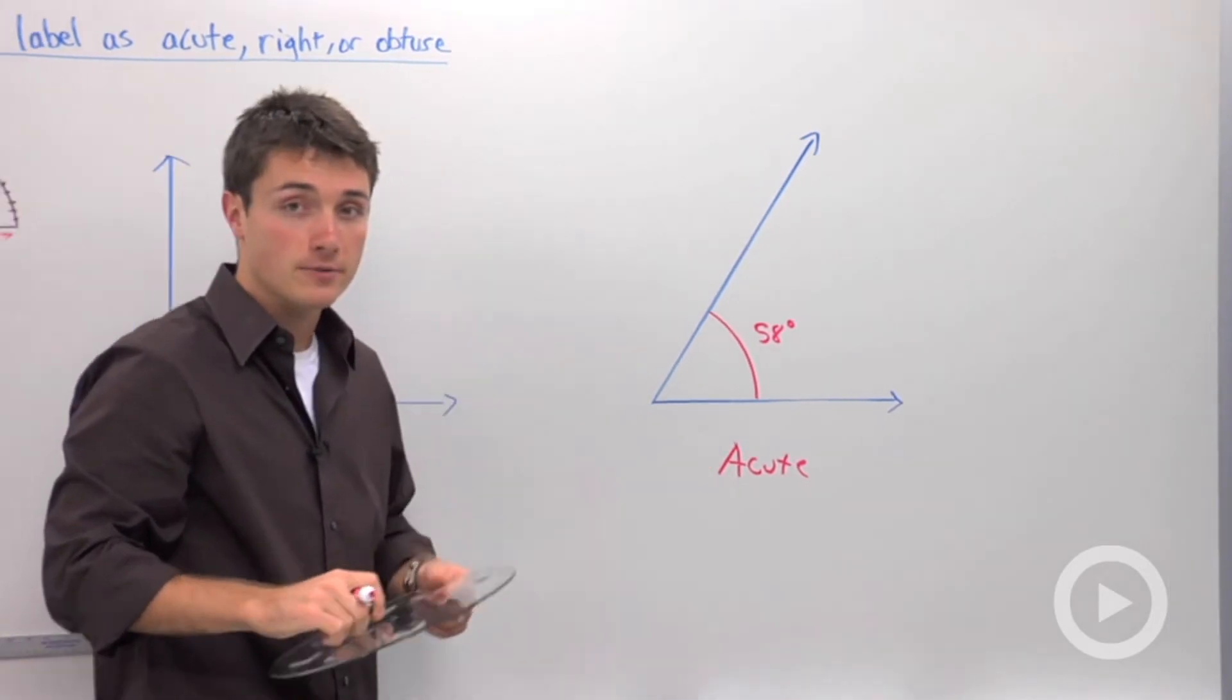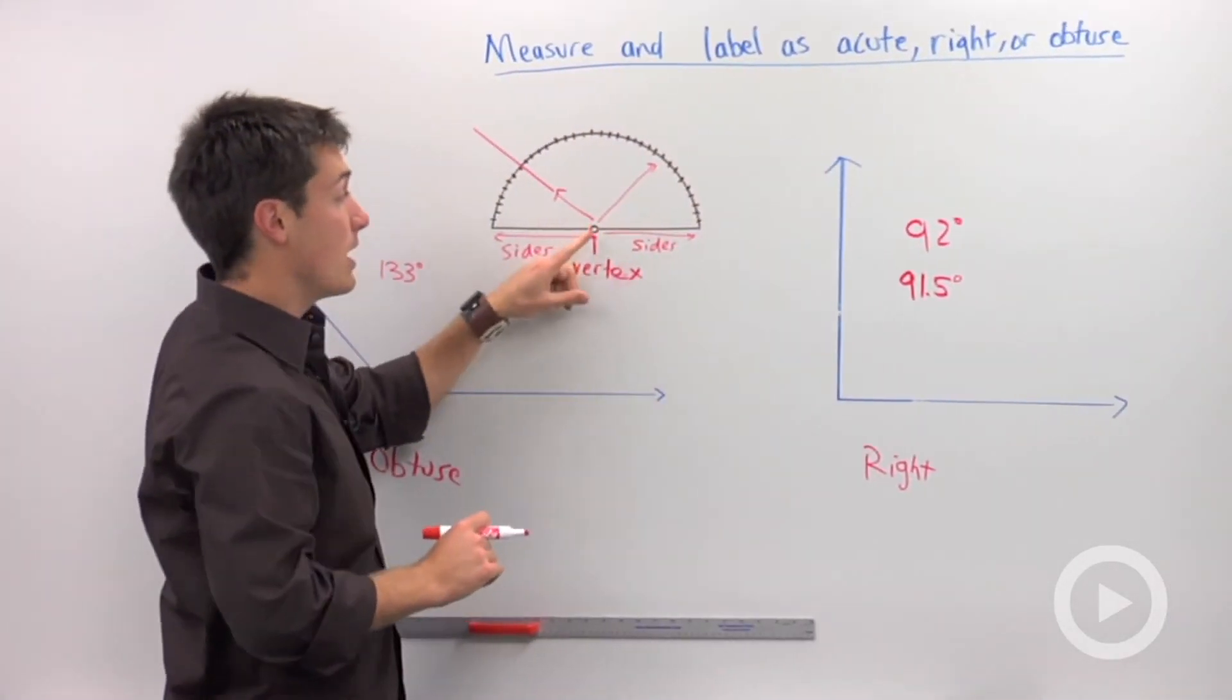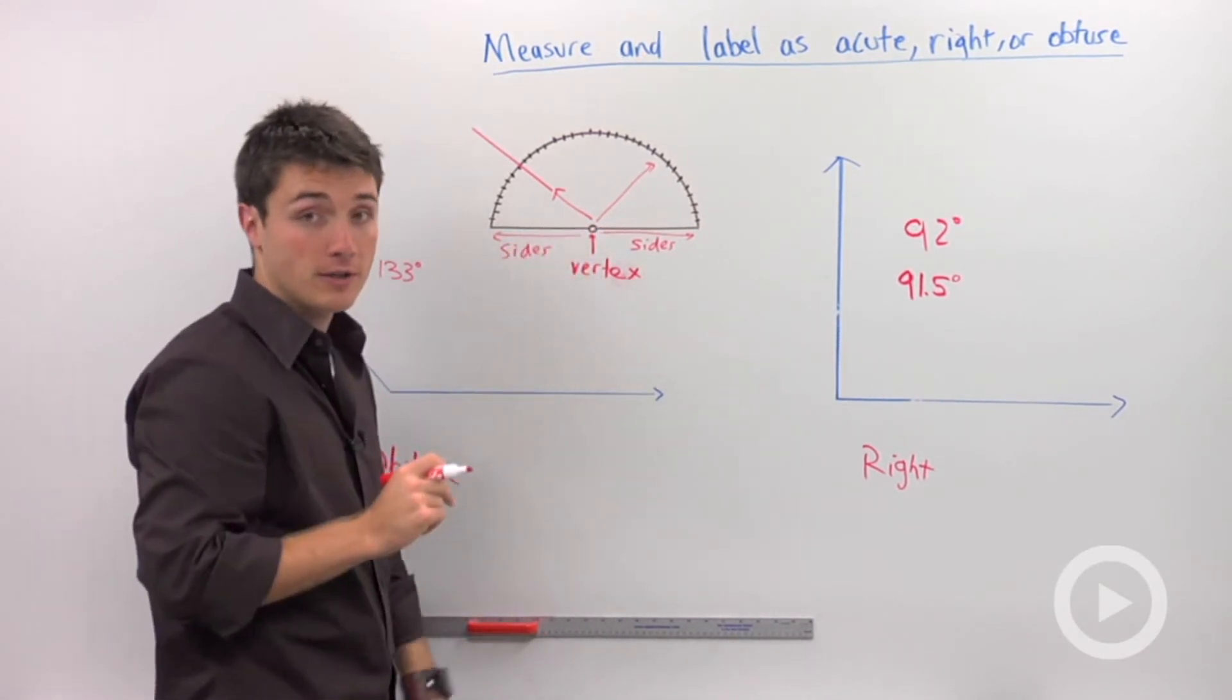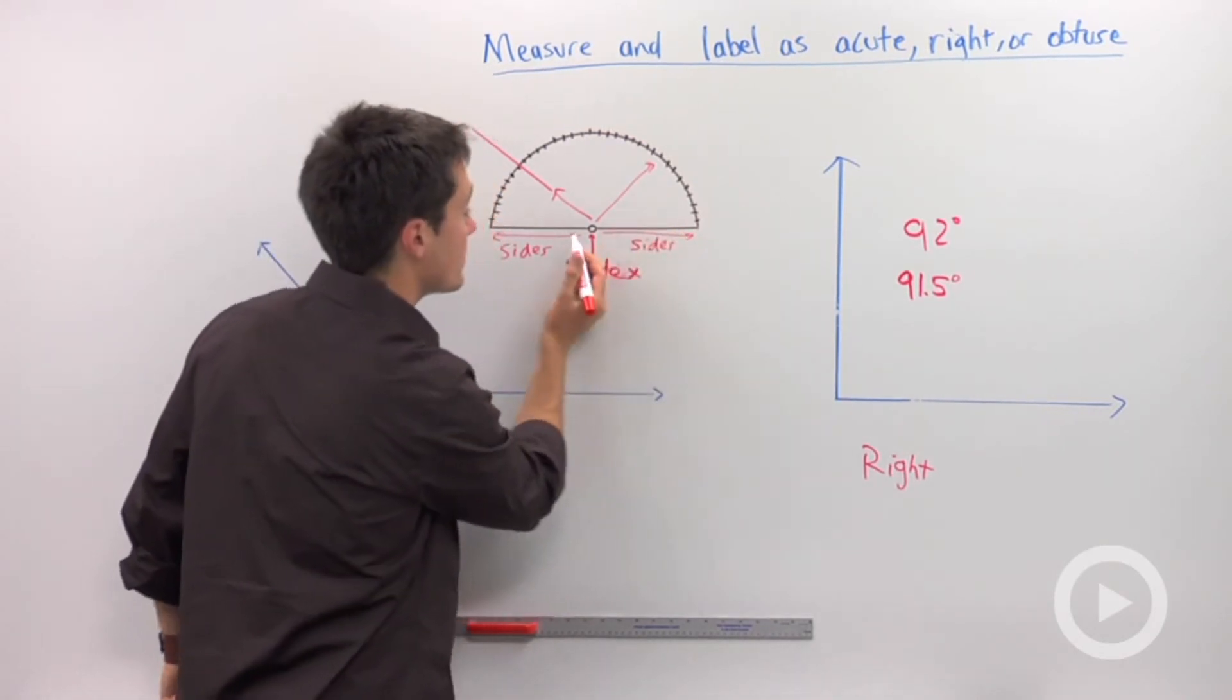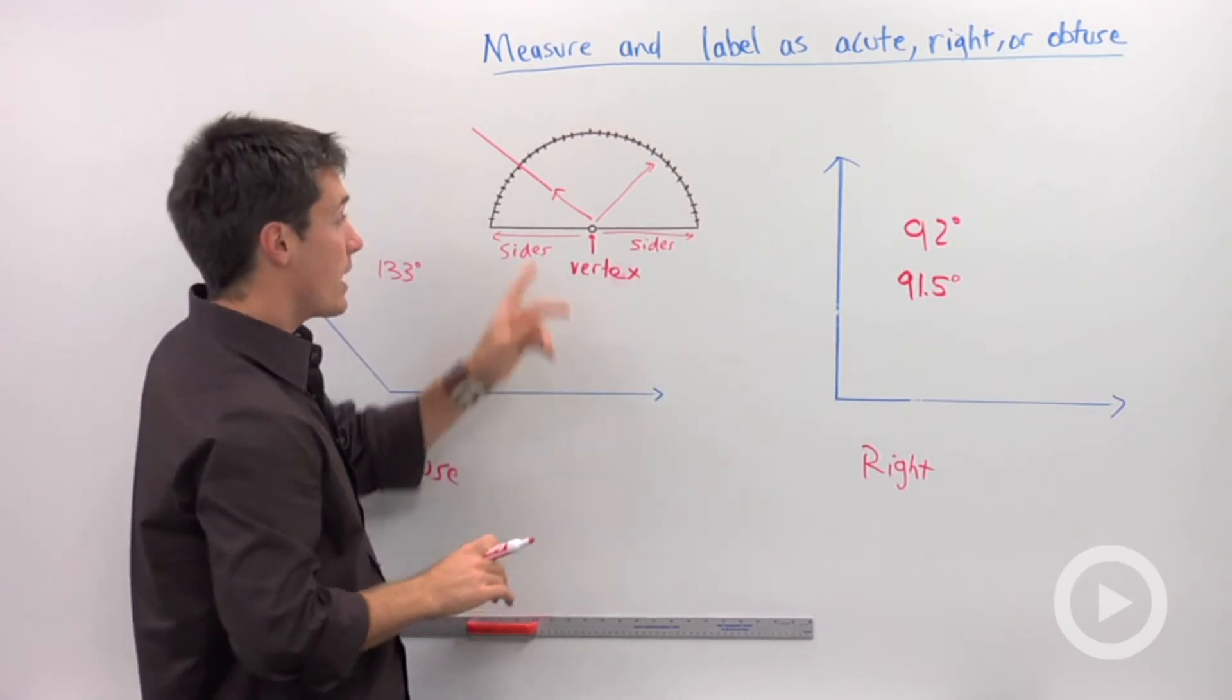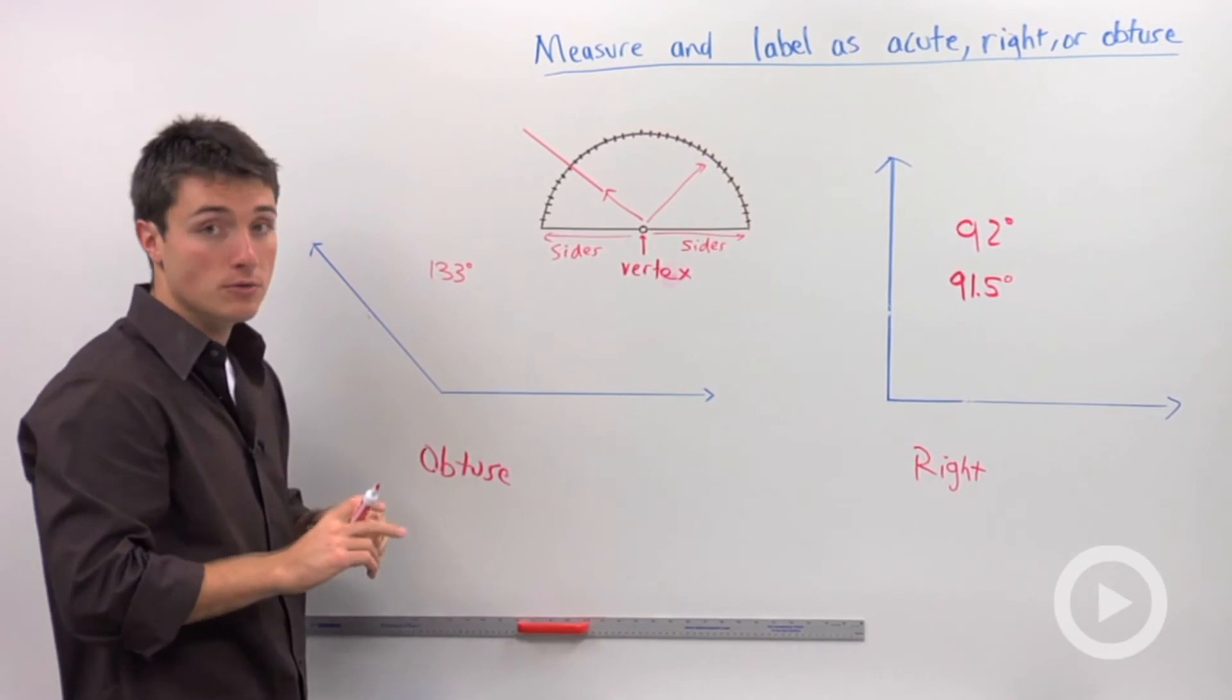So the key to using your protractor, remember there's about three. First is align whatever center hole that you have of your protractor on the vertex. Second key thing is align one of these edges along the side of your angle. And the last key thing is make a guess about the size of the angle, and that will tell you which number to use.